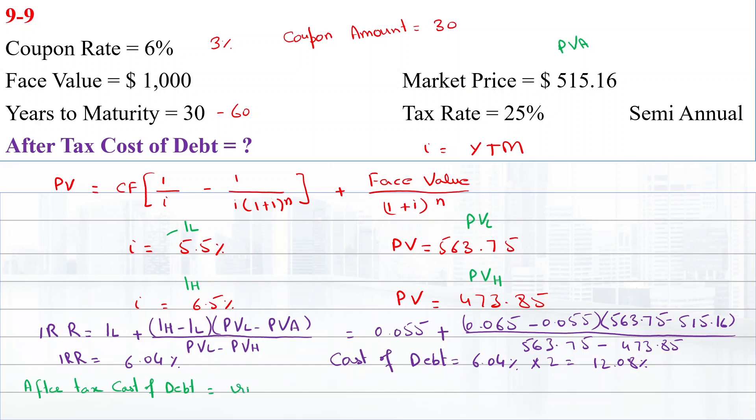After-tax cost of debt equals cost of debt times (1 minus T), which equals 0.1208 times (1 minus 0.25), giving us 9.06%.